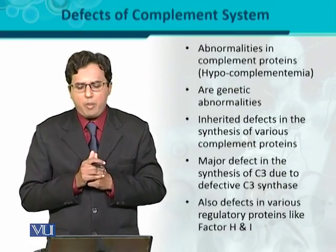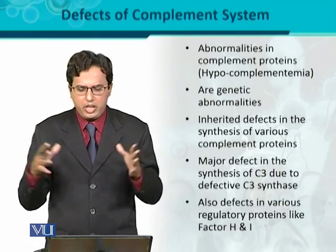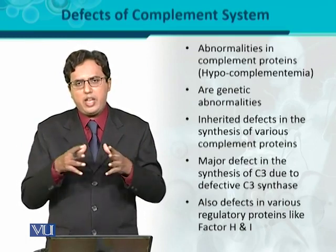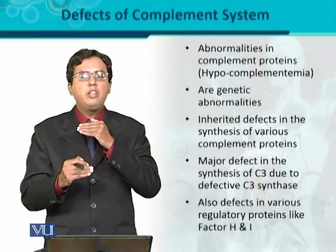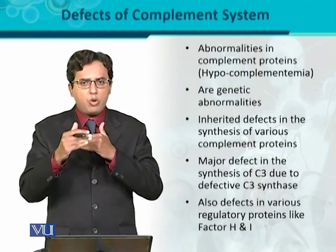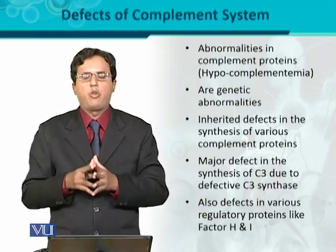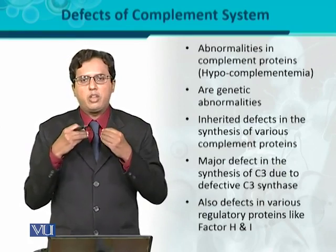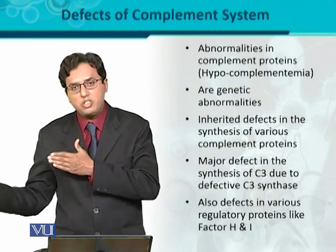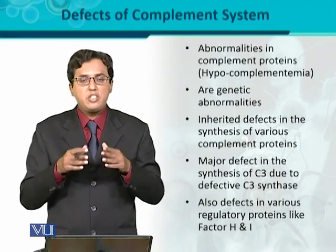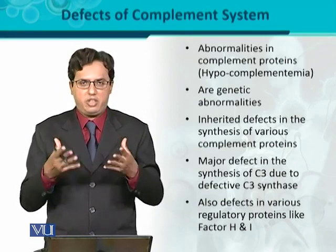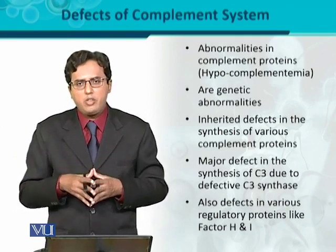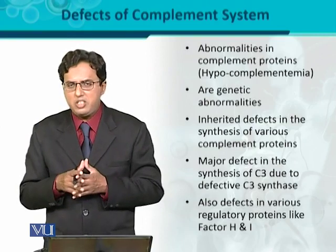Another important problem involves regulatory proteins like Factor H and Factor I. These regulatory proteins control the excessive or uncontrolled degradation of complement protein C3, and they prevent abnormal lysis that could lead toward autoimmunity — where complement proteins bind irrespective of self-recognition. Deficiency of these regulatory proteins itself leads toward an immunodeficiency state, because the downstream proteins responsible for the effective complement response cannot be synthesized properly.